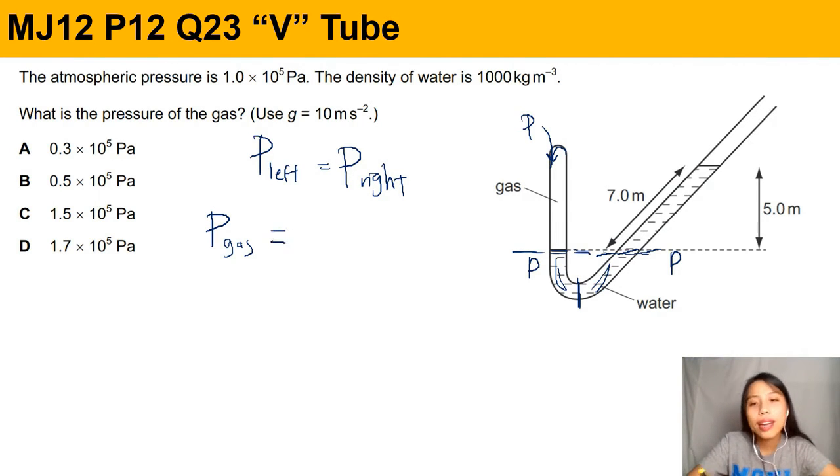On the right side, we have pressure at this point from this whole column of water. So you need to remember hydrostatic pressure. P is rho gh. Okay, so you must write that down. The density of water times g times that height which is 5 meters. Okay, any other pressure to add?